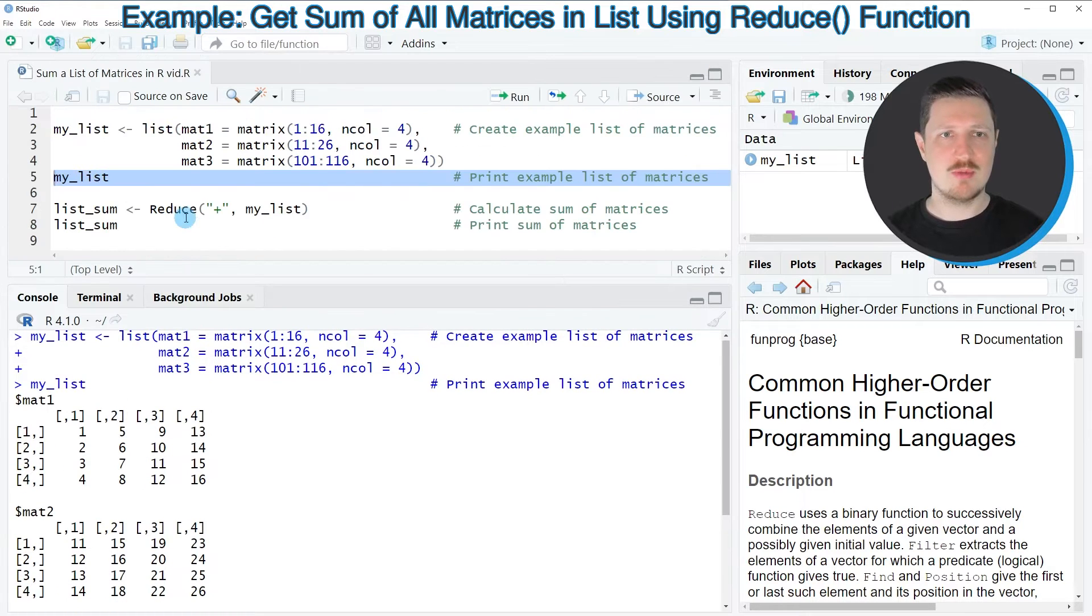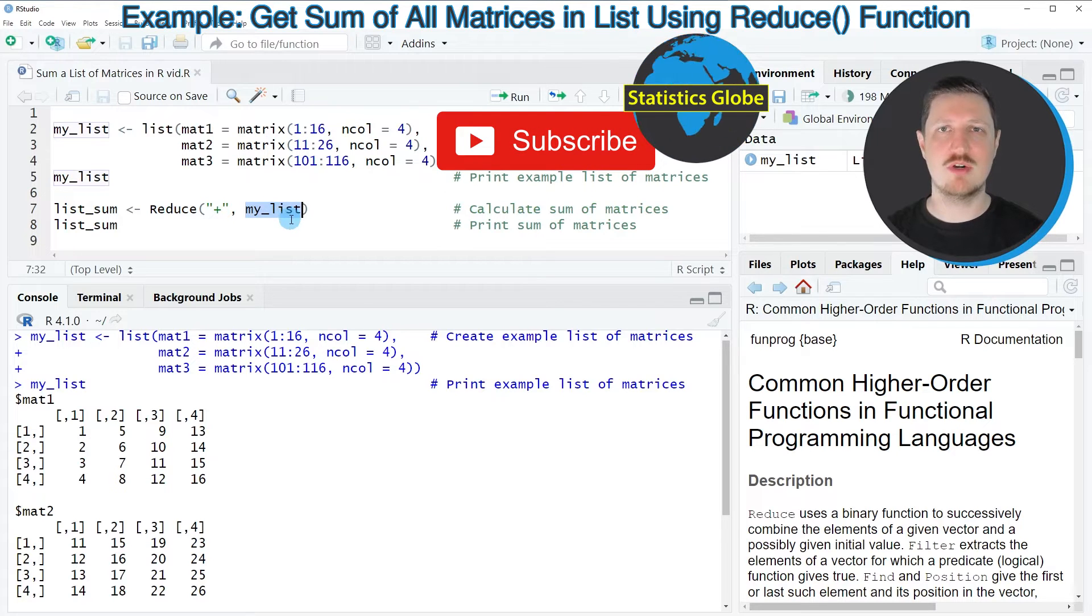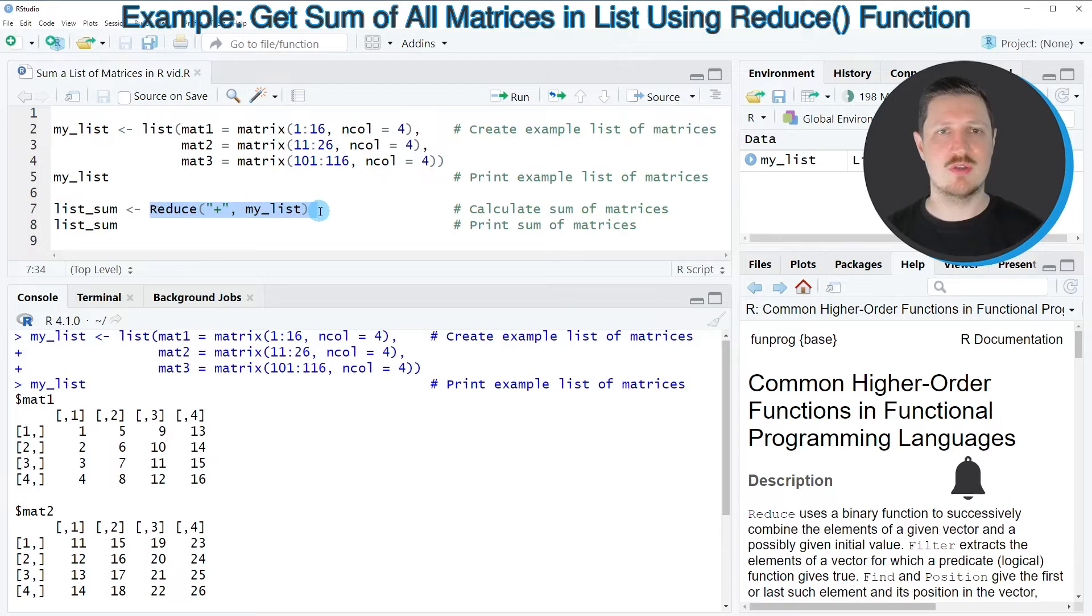Then we can apply the reduce function as you can see in line 7 of the code. Within the reduce function we need to specify the plus operator, and then we also need to specify the name of our input list. In this case I'm also storing the output of the reduce function in a new data object that I'm calling list_sum.